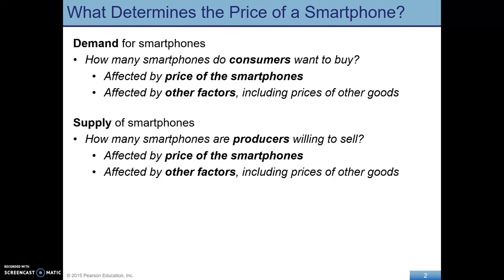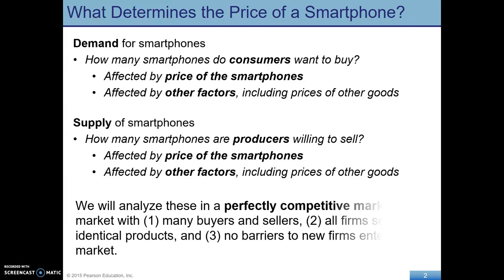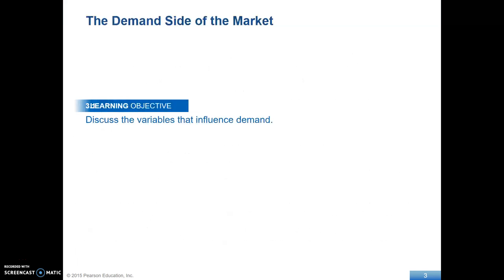And supply, like demand, is also affected by other factors, including the prices of other goods. We're thinking about this in a perfectly competitive market where there are many buyers and many sellers. All firms are selling identical products, and there are no barriers to firms entering the market. So these are simplifying assumptions in this model, but it's a tool to help us analyze the world.